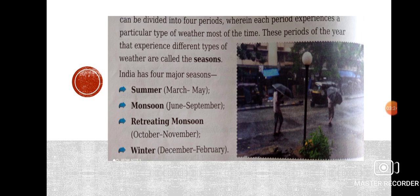Now let's look at seasons in India. The weather of a place keeps changing throughout the year. The year can be divided into four periods, wherein each period experiences a particular type of weather most of the time. These periods are called seasons. After every three to four months the weather changes, and that period is what we call a season.